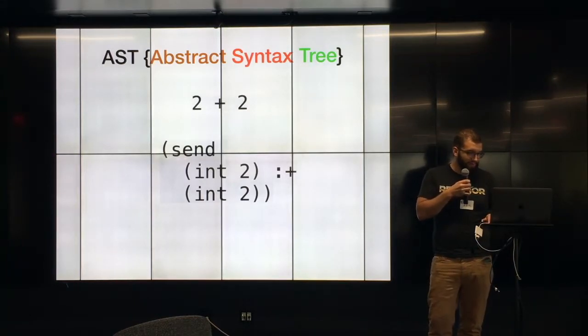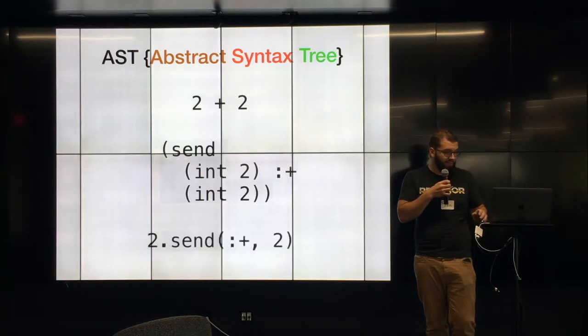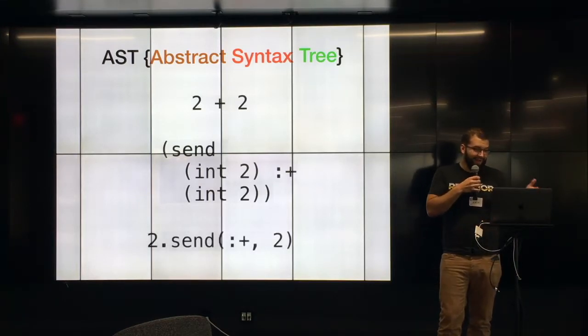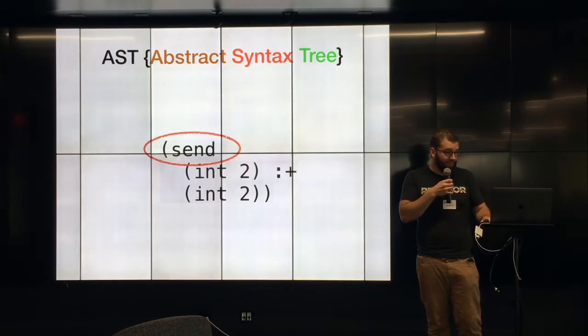I'll just give you a concrete example of what that looks like. For example, we've got the Ruby code 2 plus 2. This gem parser would produce this type of AST. It's kind of like Lisp if you're familiar with that. So there's a lot of parentheses. We have a node type which is send. And then we have the object that method is being sent upon, then we have a method which is the plus, and then we have the arguments which is the int 2. Another way of thinking of that is 2.send, send the message of plus argument 2.